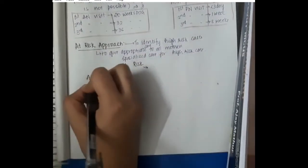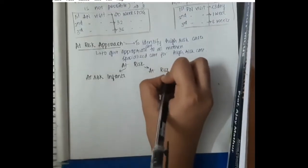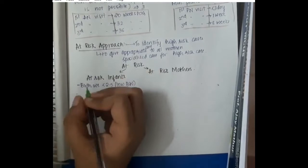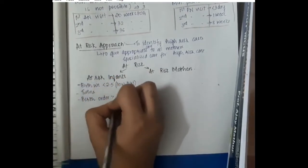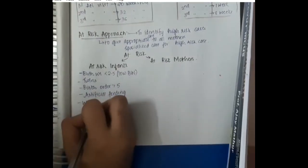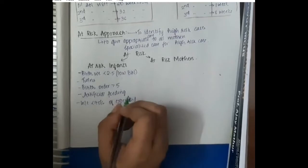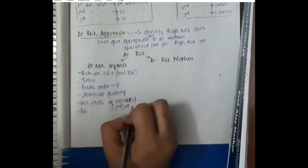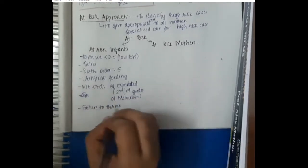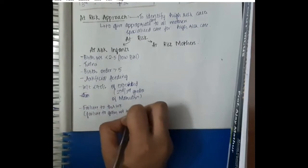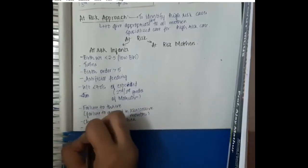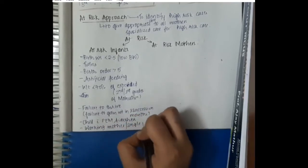At risk approach is present for at risk infants and there are also at risk mothers. At risk infants include those with birth weight less than 2.5 kg that is low birth weight, twins, birth order more than 5, artificial feeding because with artificial feeding they are more prone to infections. Weight less than 70% of expected because they are under malnutrition especially 2nd or 3rd grades of malnutrition. Failure to thrive, which is failure to gain weight in 3 successive months. Child with protein energy malnutrition and diarrhea, working mother and single parent also comes under at risk infants.